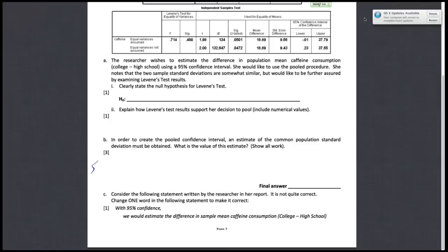So you're going to have SP is equal to N1 minus 1 times S1 squared plus N2 minus 1 times S2 squared all over N1 plus N2 minus 2, and then you square root of all that. So we'll just plug in all the values right here.